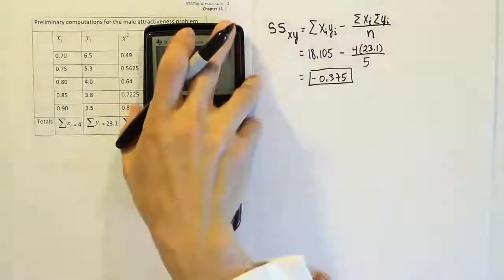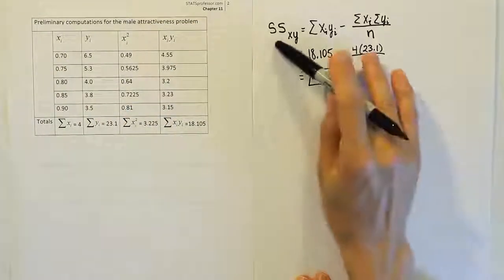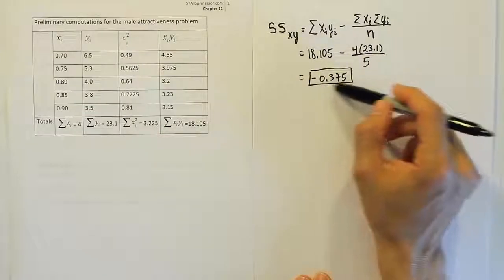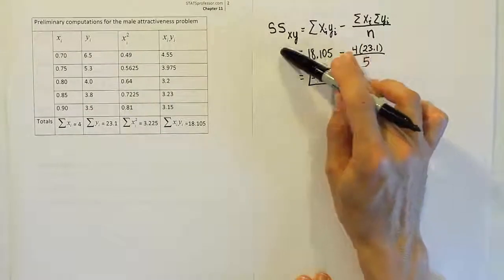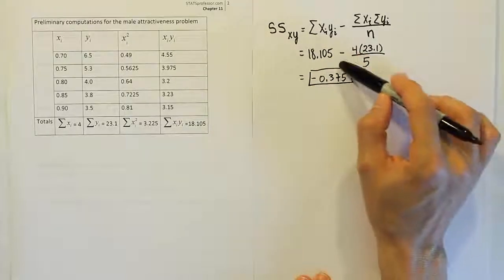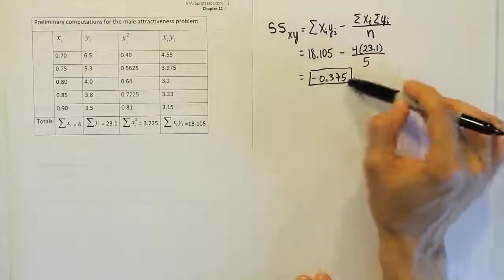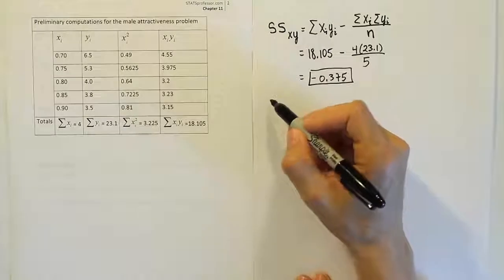Just a heads up here before we move on. When you do these sum of square values, the only one that could ever be negative is the mixed term xy. If it's xx or yy, this could not be negative. The mixed term, however, can be negative, so it's okay that it's negative.